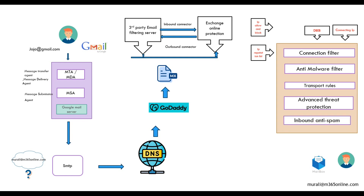After ATP, the email moves to inbound anti-spam. Inbound anti-spam policies are a set of rules that determine how incoming emails are filtered for spam. DNS authentication records such as SPF, DKIM, and DMARC are all scanned at this level. Once inbound anti-spam processing is complete, the email is transferred to the mailbox.